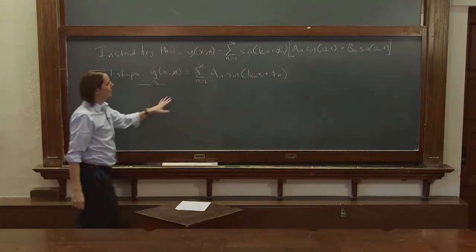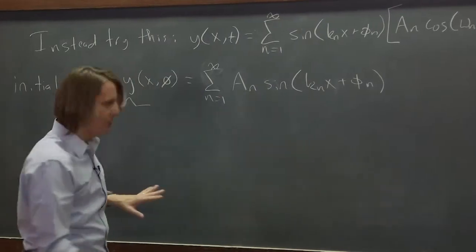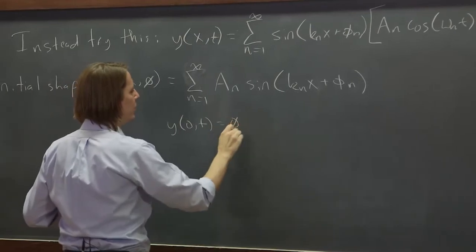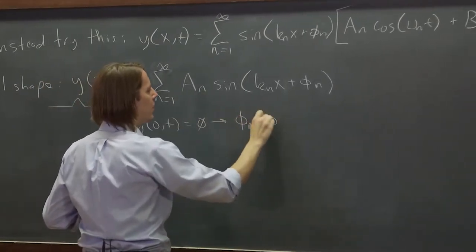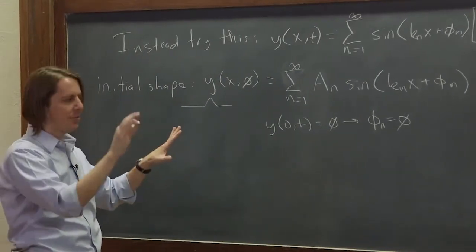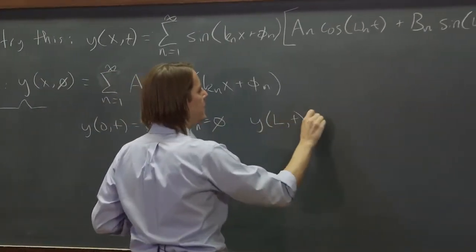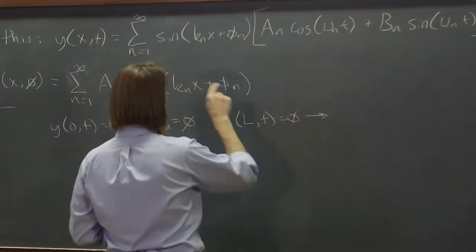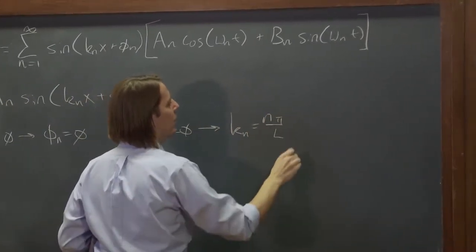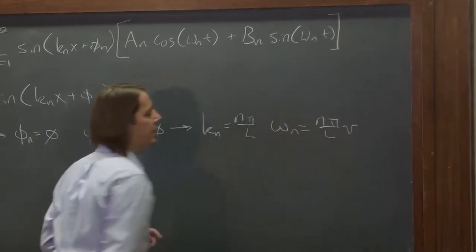We can also figure out what this is by remembering we have these other conditions. We say, oh, but we also have that y(0,t) = 0 for all time. And that's what tells us that φ_n's are 0. This is like going back to our original work on the separated solution, the f(x) times the cos(ωt)'s. And we also know that y(L,t) = 0. And that's what told us that k_n = nπ/L and ω_n = nπv/L. All right.